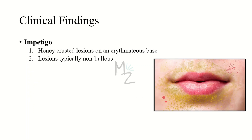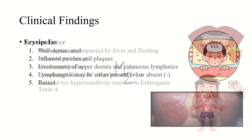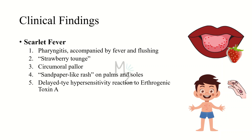There is a lumpy-bumpy appearance on immunofluorescence microscopy. Impetigo presents as honey-crusted lesions on an erythematous base — as seen in this picture — and these lesions are typically non-bullous. Erysipelas presents as inflamed patches and plaques involving the epidermis and cutaneous lymphatics. They are well-demarcated with a clear crisp line between normal and affected skin, may involve lymphangitis, and the plaques are raised. Scarlet fever accompanies pharyngitis with fever and flushing. Its characteristic feature is a strawberry tongue — the tongue has dots like a strawberry — with a circumoral halo around the mouth. There is a sandpaper-like rash on palms and soles, and a delayed hypersensitivity reaction to erythrogenic toxin type A.